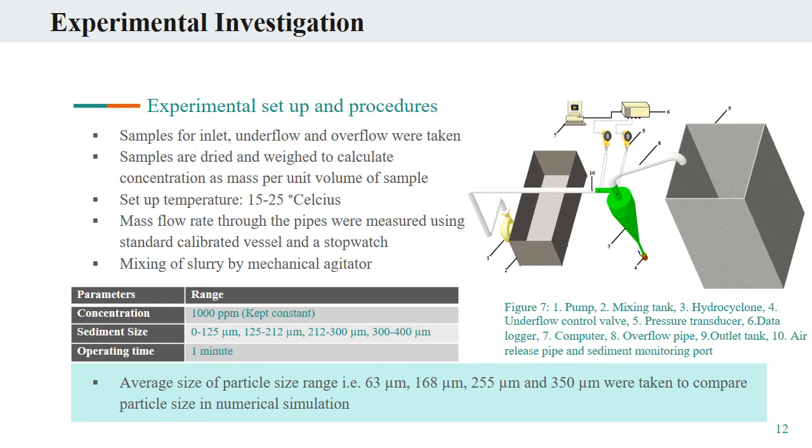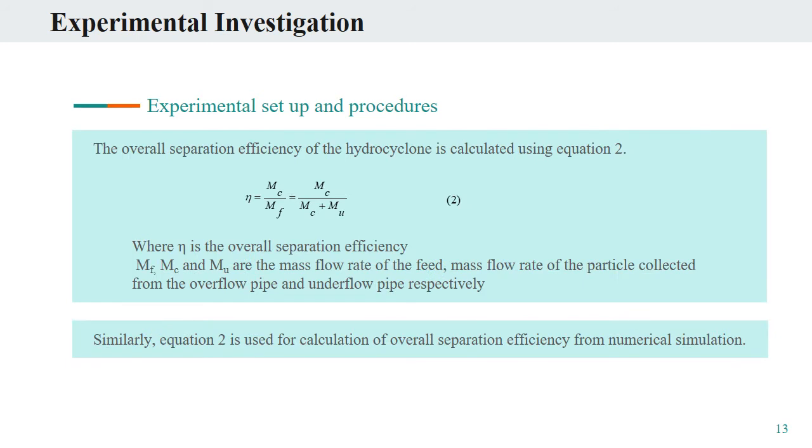Time samples of the discharge from the inlet, underflow, and overflow are taken, then dried, weighed, and recorded to calculate the concentration as mass per unit volume of the sample. Mass flow rate for the pipes are measured using standard calibrated vessels and stopwatch. Experimentally, the overall separation efficiency of the hydrocyclone is calculated using Equation 2. Here the term mf, mc, and mu are the mass flow rate of the feed, mass flow rate of particles collected from the overflow pipe, and the underflow pipe, respectively. For calculating the efficiency for numerical simulations, Equation 3 is used.